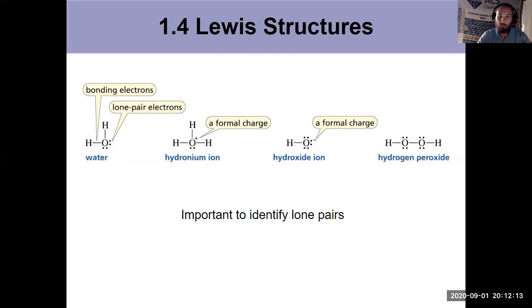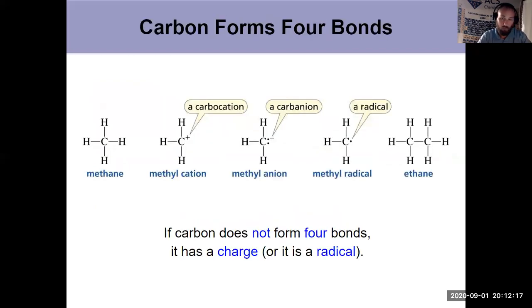That formal charge also allows us to predict how many bonds things like to have. Carbon, for example, likes to form four bonds. If it doesn't have four bonds, it's going to have a formal charge or be a radical species. Organic is all about the study of carbon. Carbon is going to form four bonds nine times out of ten. If not, we'll have a cation. This is specifically called a carbocation, a carbon cation. We'll see that some this semester. This is called a carbanion, a methyl anion. We won't deal with radicals until chapter 12. Right now, carbon forms four bonds.